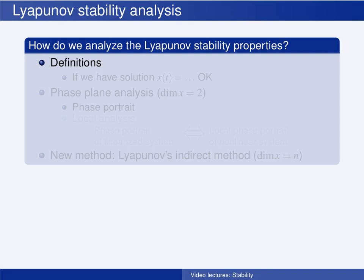All the definitions are expressed with respect to the solution as a function of time t. So if we have an analytical expression of the solution, then we can use the definitions to analyze the stability properties. However, as we discussed in the video about the differences between nonlinear and linear systems, we are generally not able to find an analytical solution for nonlinear systems — we cannot find x as a function of time t.